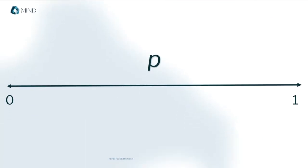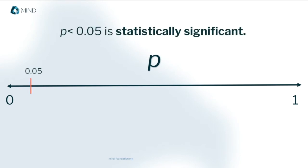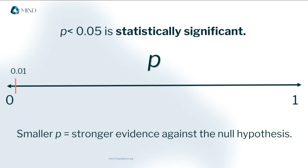Conventionally, scientists say that a p of under 0.05 is good evidence that the null hypothesis isn't true. We call that statistically significant. Some are more conservative and use 0.01 as the significance threshold. But either way, the lower the p-value, the stronger the evidence against the null hypothesis.